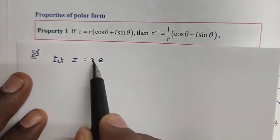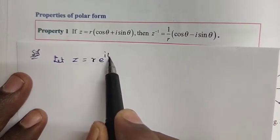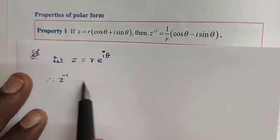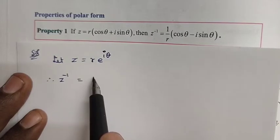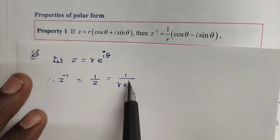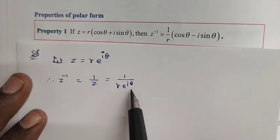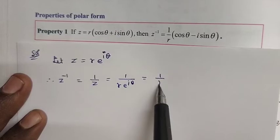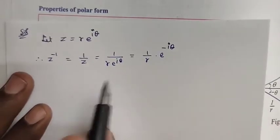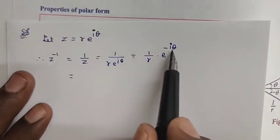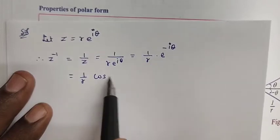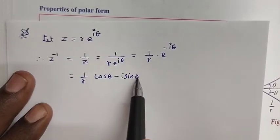If z is equal to r into e to the power of i θ, then z inverse is equal to 1 divided by z, which equals 1 divided by r into e to the power of i θ. Since e to the power of i θ becomes e to the power of negative i θ, we get 1 divided by r into cos θ minus i sin θ.